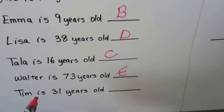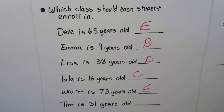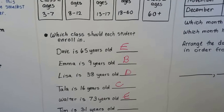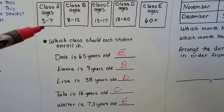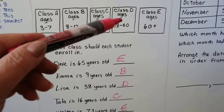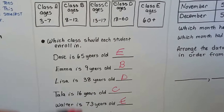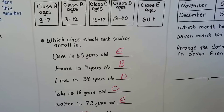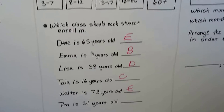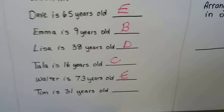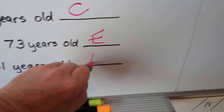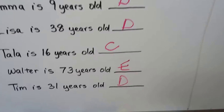Tim is 31 years old. Where would Tim be in the swimming class? He'd be in Class D, because that's 18 to 60 years old and 31 falls in that range.